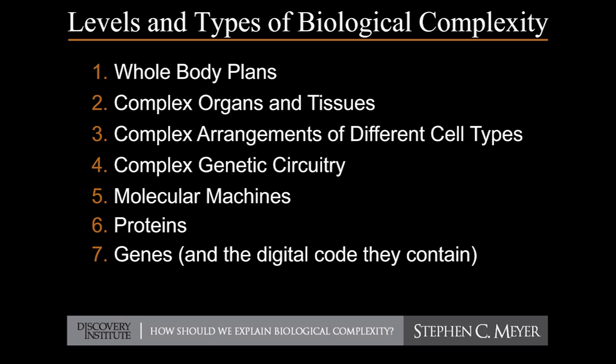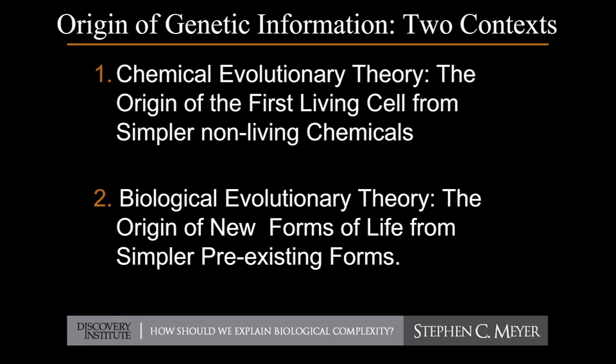I'll focus on a list of seven forms of complexity. The origin of genetic information intersects evolutionary biology in two contexts. There are two forms of evolutionary theory: classical biological evolutionary theory, which attempts to explain the origin of new forms of life from simpler pre-existing forms; and chemical evolutionary theory, which addresses the question of the origin of the first life from simpler pre-existing chemicals.